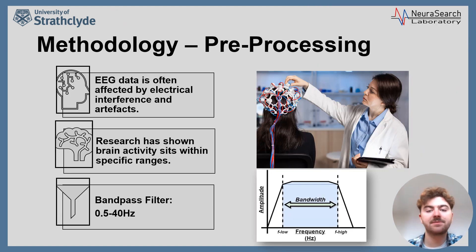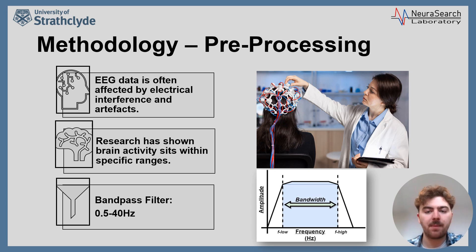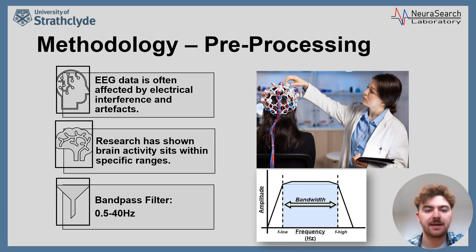During EEG recording, it is commonplace for electrical activities caused by the individual's actions to affect the data, causing artefacts to form within it. These unwanted signal fragments can negatively impact the measurement and skew the results. Literature has shown that most human brain activity sits within a specific range, primarily between 0.5 to 40 Hz. For pre-processing, we marked bad channels previously indicated by the dataset creator and removed them from our dataset. We then applied a bandpass filter between 0.5 to 40 Hz, so that anything beyond these ranges can be considered noise.